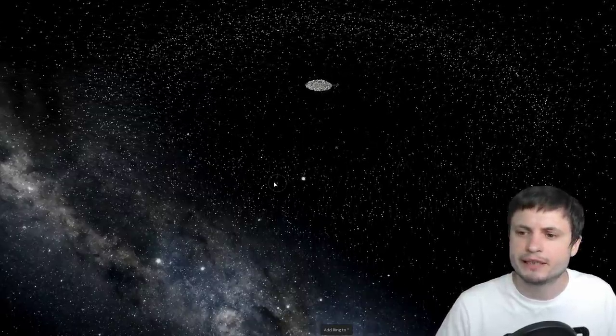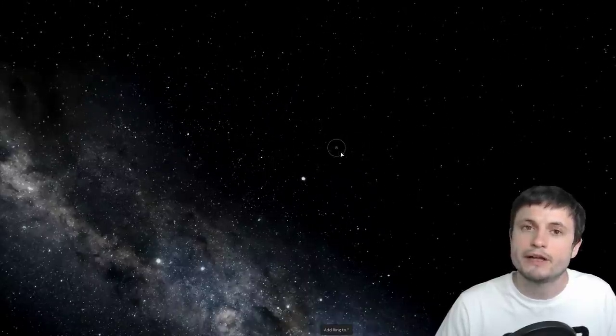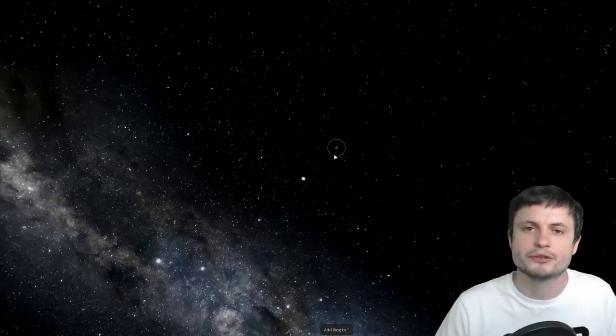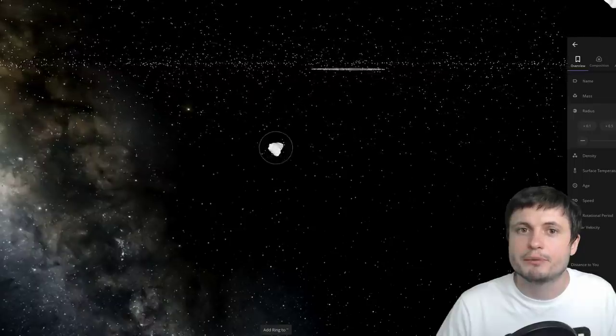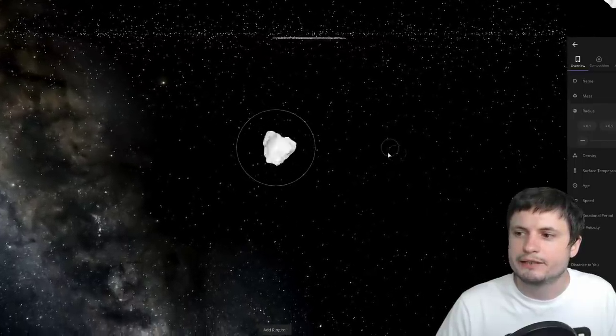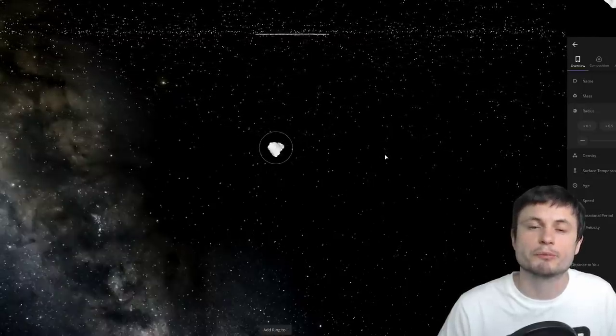They realized that these tiny particles, these little particles that you see here, each of them eventually is going to start mixing together and eventually form bigger and bigger and bigger shapes. And at some point, this can become large enough to literally start forming planets.